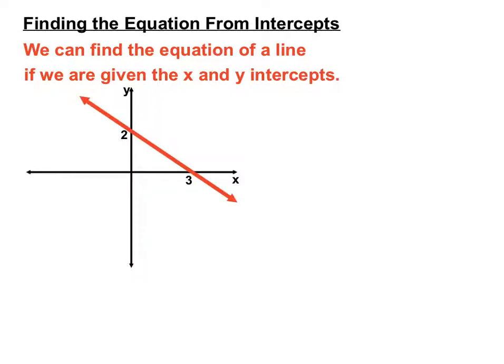This is the number plane and we have a line here. It's indicated that we have a y-intercept of 2 and an x-intercept of 3. Let's see how we can compile the equation of this line from just those two clues.